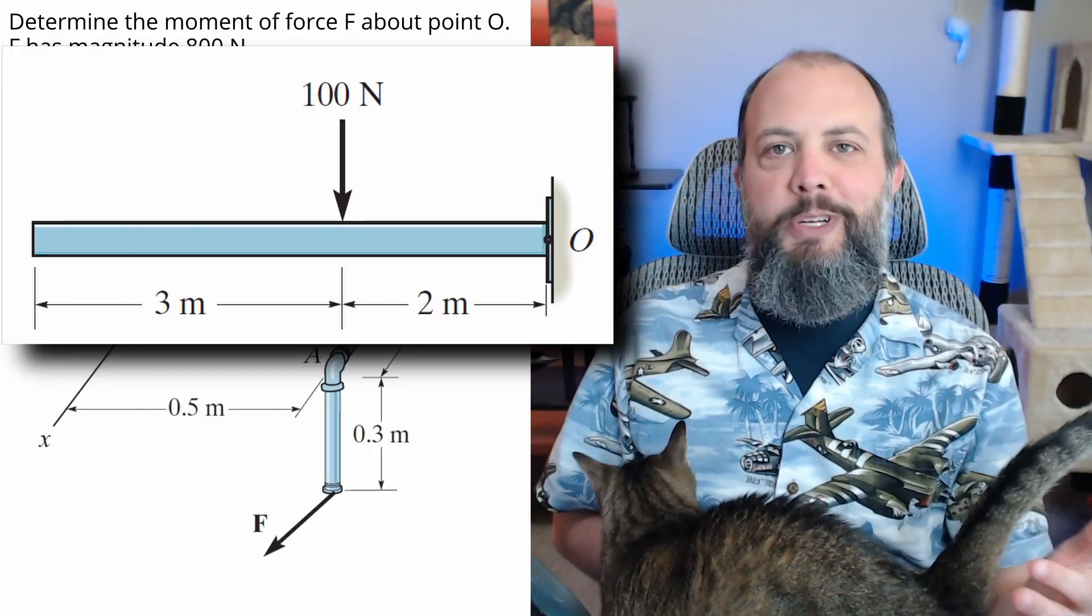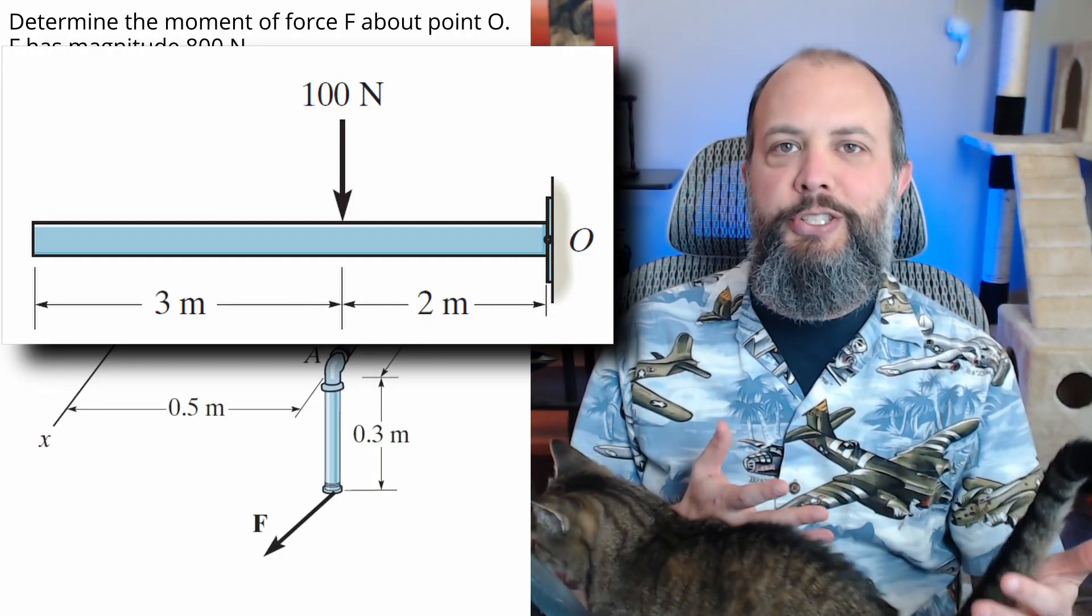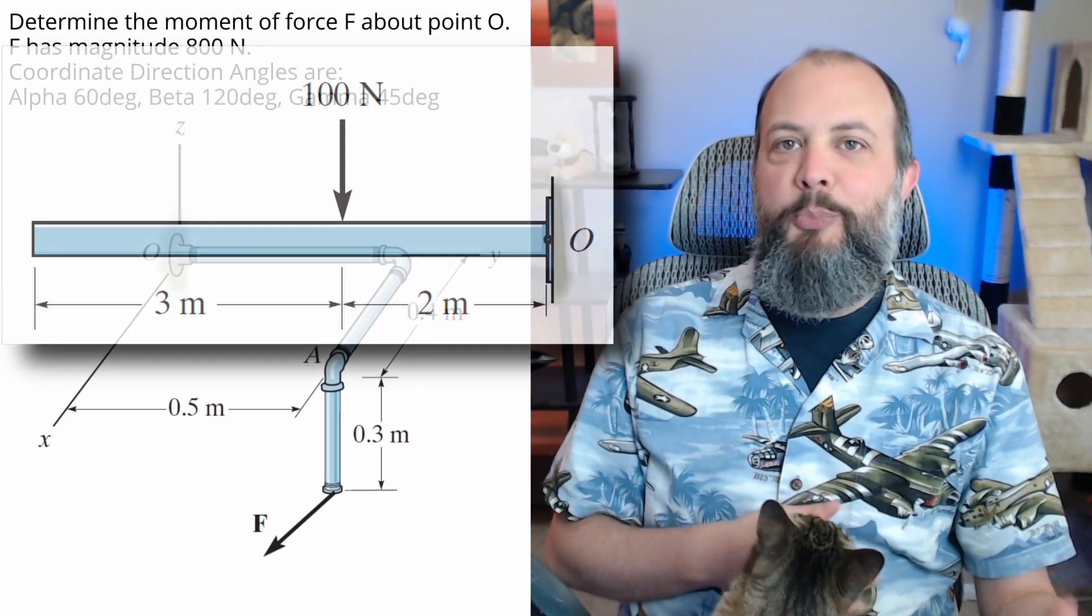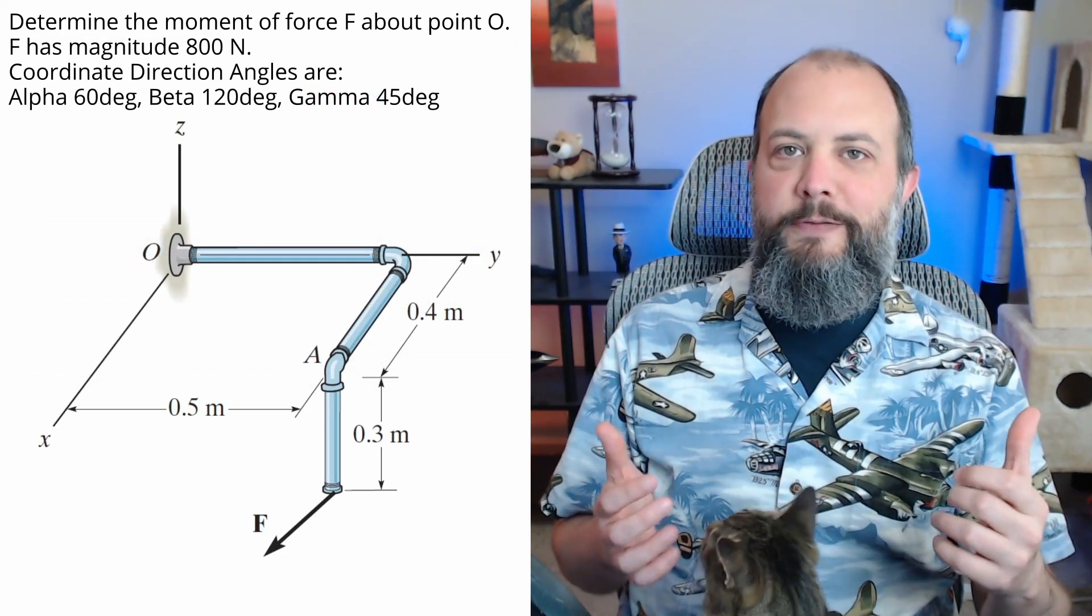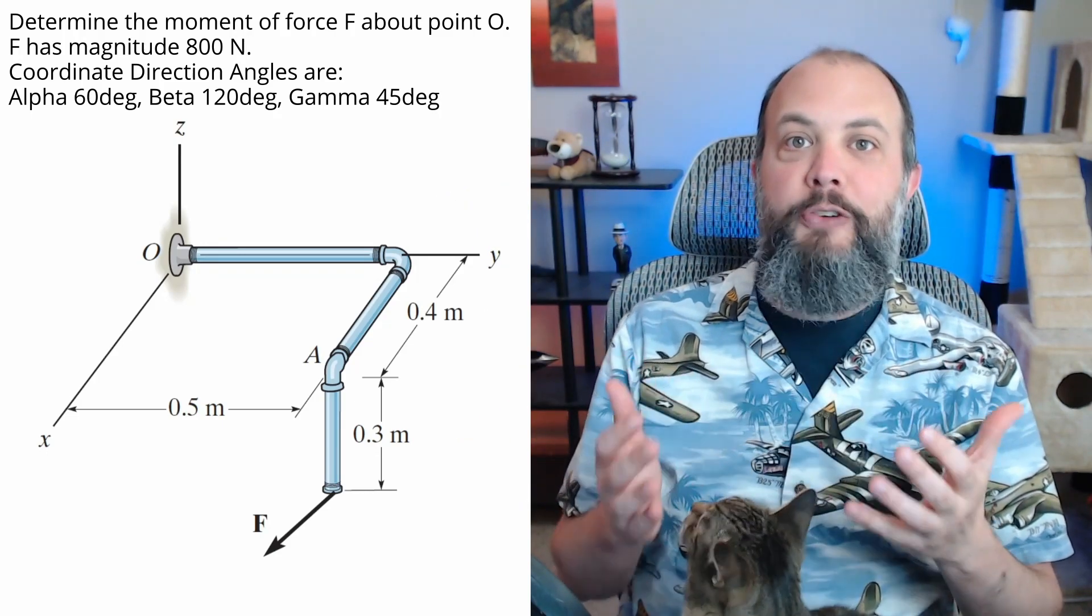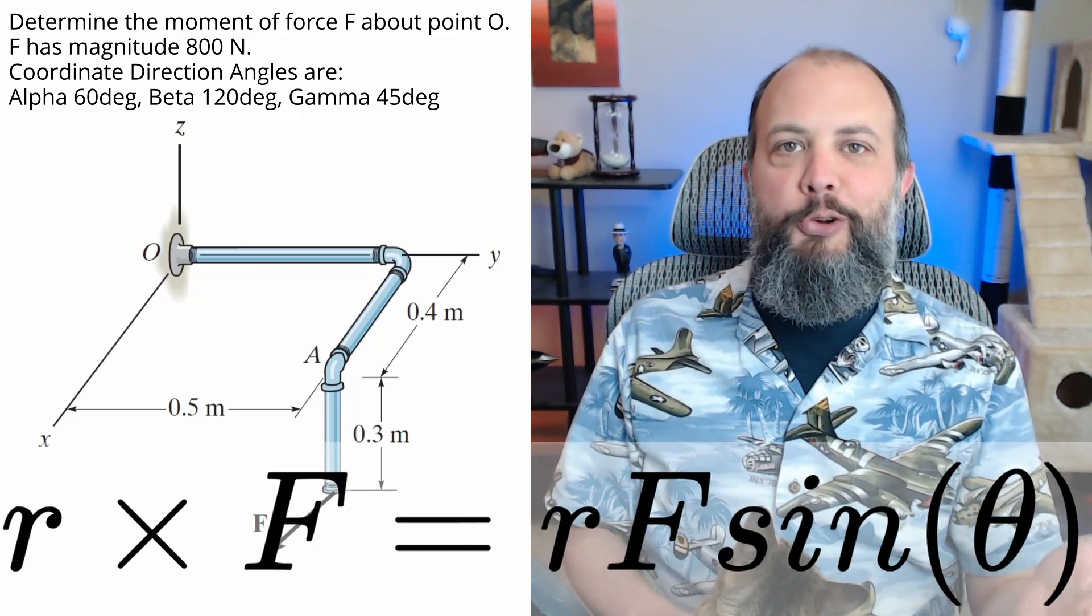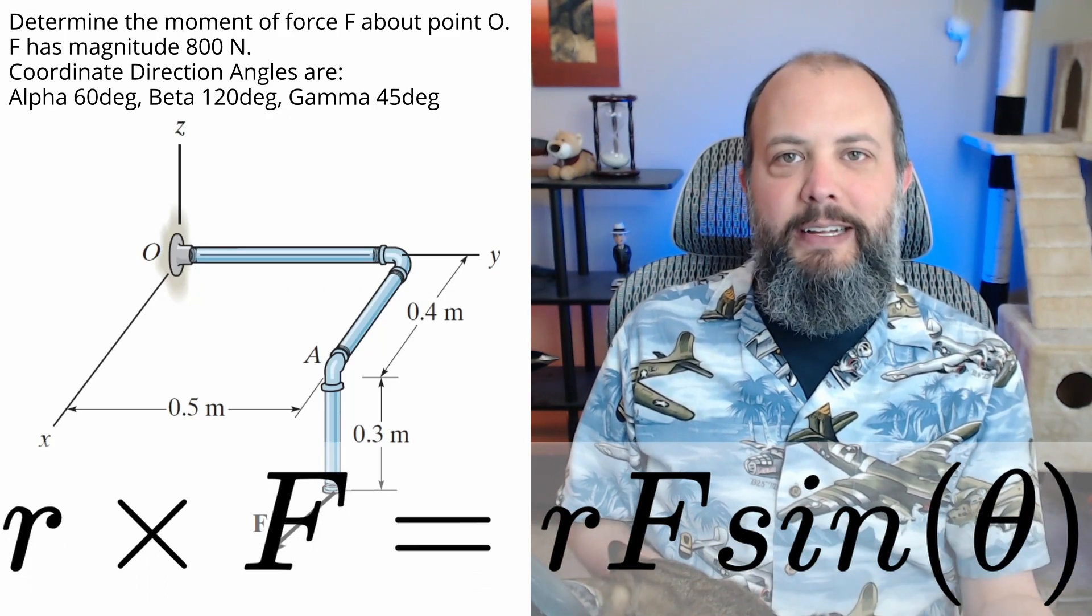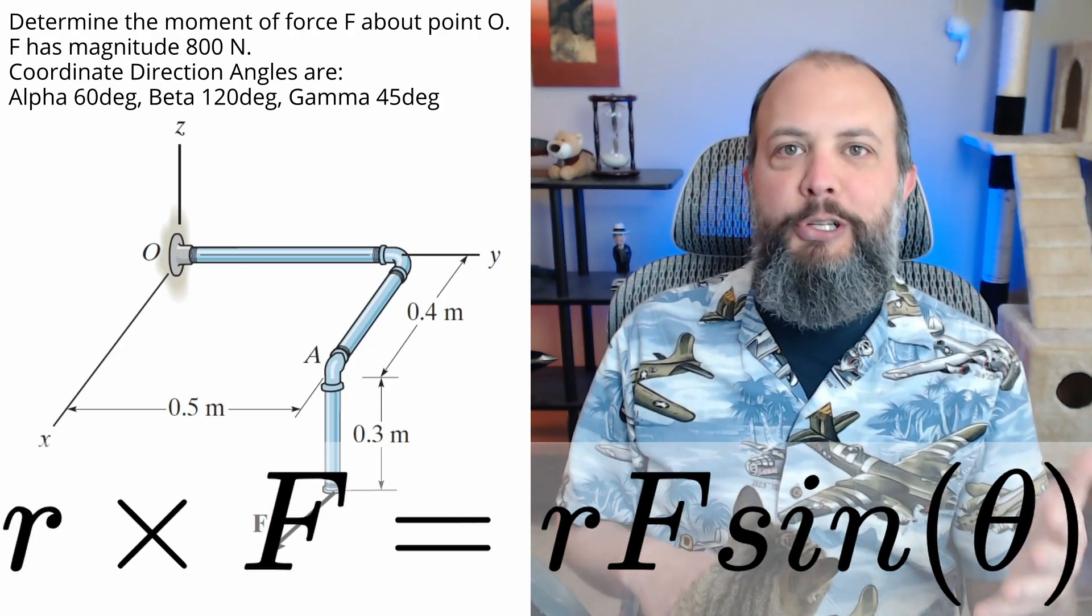Two-dimensional moments are so much easier. You can usually just do force times distance when your force is perpendicular to your position vector. But in 3D space, not only is the force usually not perpendicular, you usually don't even know what angle your vector is at. So the default cross product equation you're probably familiar with is AB sine theta. Without that angle theta, we have to look to other methods.